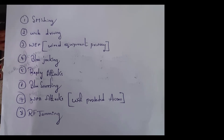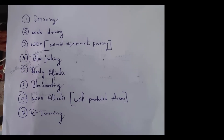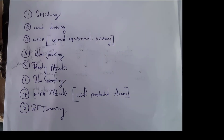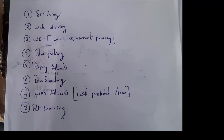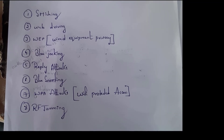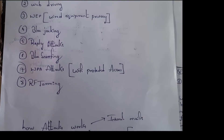WAP stands for wired equipment privacy. WAP attacks are performed when a user connects to free public Wi-Fi. When a user connects with free public Wi-Fi, the attacker can easily hack those persons who are connected with that free Wi-Fi.